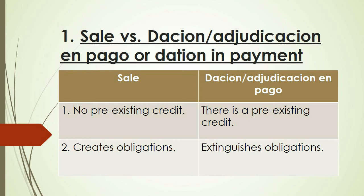Number one: in sale, there is no pre-existing credit. In other words, prior to the sale, the seller and the buyer are not obligated to each other. But in the case of Dation in Pago, there is a pre-existing credit. That is why Dation in Pago was resorted to in order to pay for this existing credit.